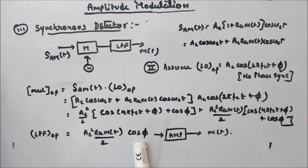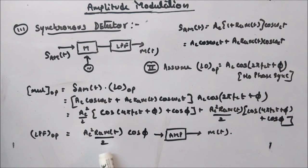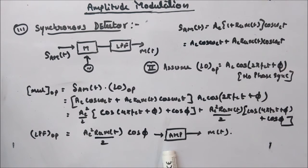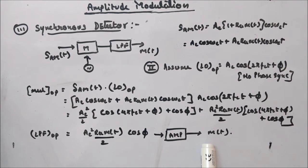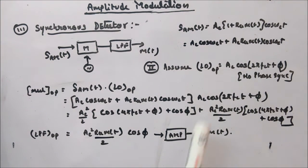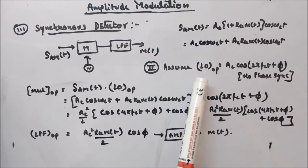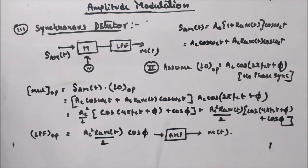At the output of the LPF you get Ac²·ka·m(t)/2·cos(φ). Here, Ac²·ka/2·cos(φ) is a constant term that can be removed by an amplifier, and you recover the message signal m(t) — the original message signal — in this case as well.